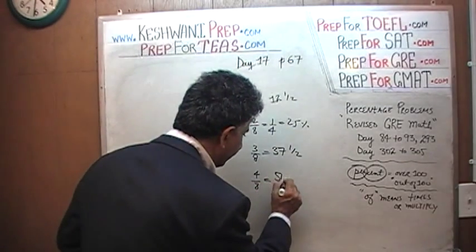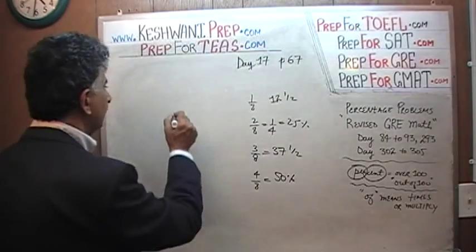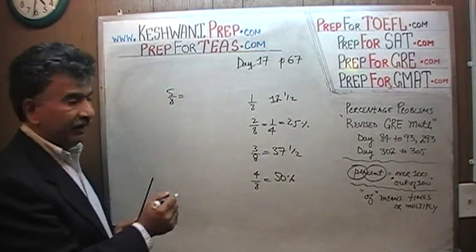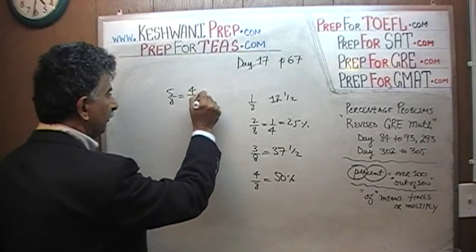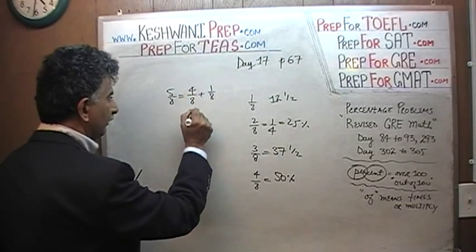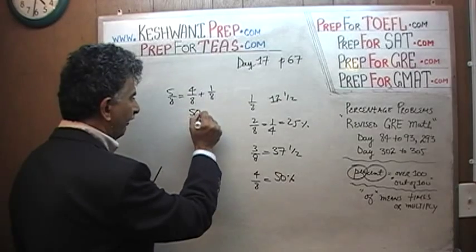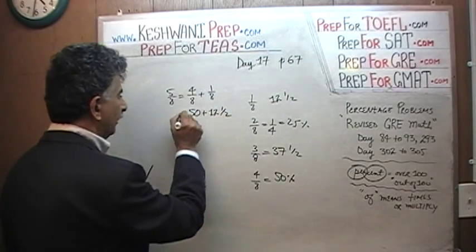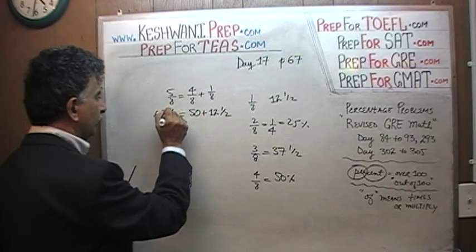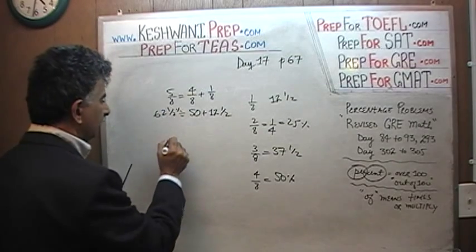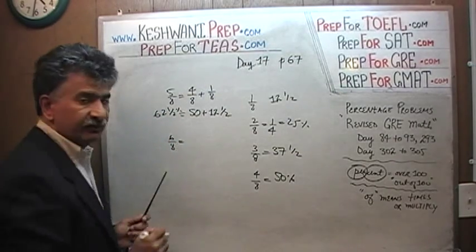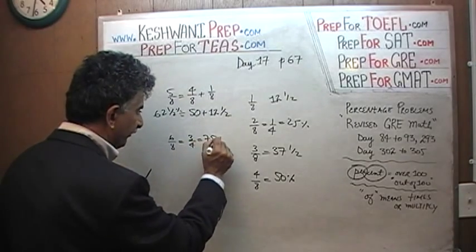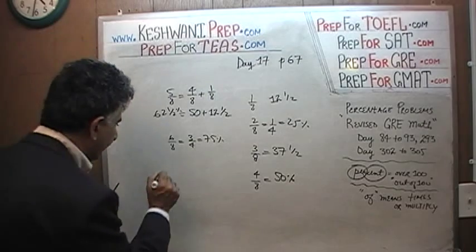Four eighths is just half, which is 50%, and we continue here. Five eighths — we just did that — which is four eighths plus an eighth, which is 50% plus 12.5%, so that comes out to 62.5%. Six eighths is very easy, because six eighths is just three quarters, which is 75%. And finally, seven eighths.